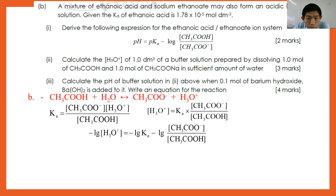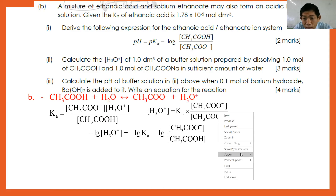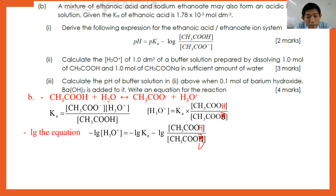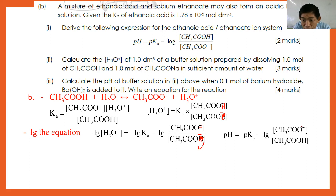To derive the expression, write the dissociation: CH3COOH + H2O ⇌ CH3COO⁻ + H3O⁺. So Ka = [CH3COO⁻][H3O⁺]/[CH3COOH], or rearranged: [H3O⁺] = Ka × [CH3COOH]/[CH3COO⁻]. Taking negative logarithm of both sides: −log[H3O⁺] = −log Ka − log([CH3COOH]/[CH3COO⁻]), which gives pH = pKa + log([CH3COO⁻]/[CH3COOH]).